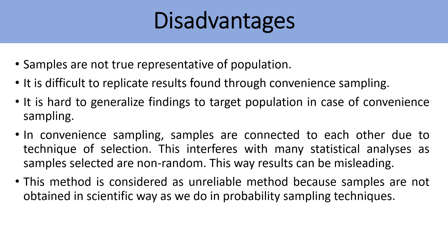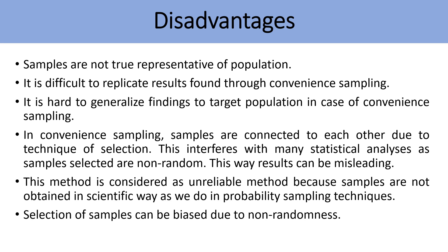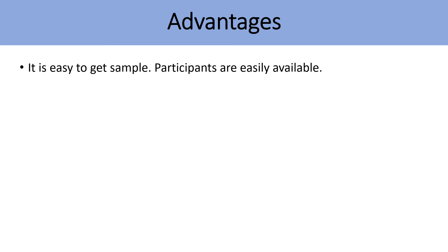This method is considered unreliable because samples are not obtained in a scientific way as in probability sampling techniques. Selection of samples can be biased due to non-randomness. There are a few advantages also — it is easy to get samples, and participants are easily available.